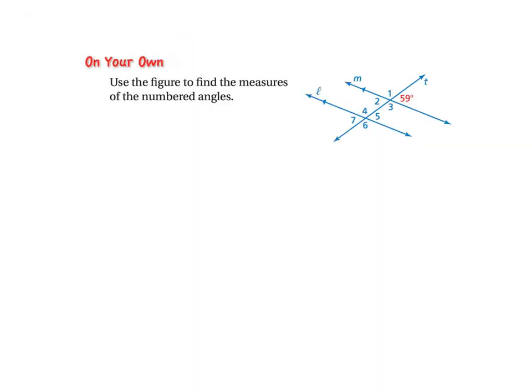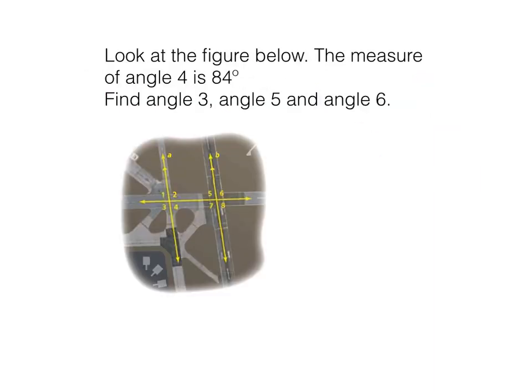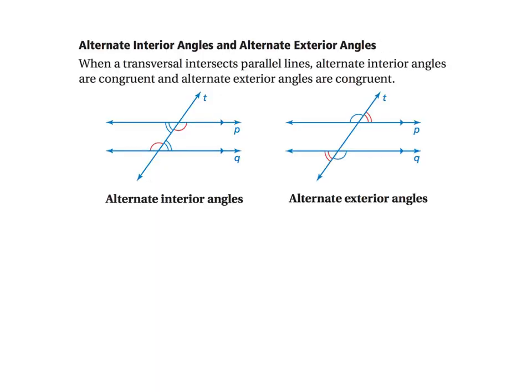Try this one on your own — we will check your notes in class tomorrow. There's one more after this. Last problem: look at the figure below. It's an airport. The measure of angle four is 84 degrees. We want you to find angles three, five, and six. Bring your answers to class tomorrow. See you next time.